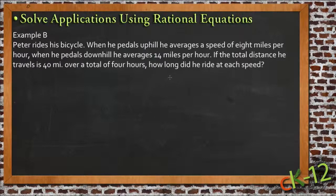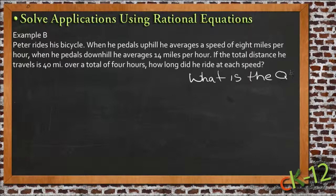First, we need to figure out what the question is. What are we actually trying to find out? At the end of the statement it says how long did he ride at each speed. That's the real question. So what we're looking for is a time.